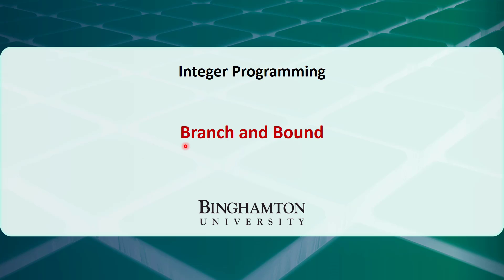In this video, I will talk about how to solve integer programming problems using the branch and bound method. The branch and bound algorithm is actually an enumeration of candidate solutions in the search space. It splits the original problem into branches of subproblems. Before enumerating the candidate solutions of a branch, the branch is checked against the upper or lower estimated bounds of the optimal solution. The branch is discarded if it cannot produce a better solution than the best one found so far by the algorithm.